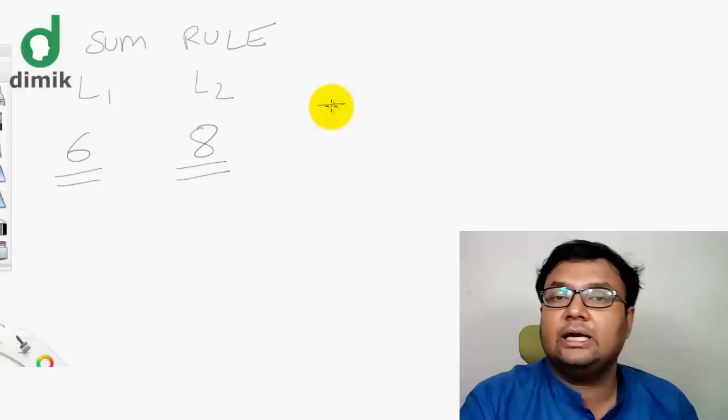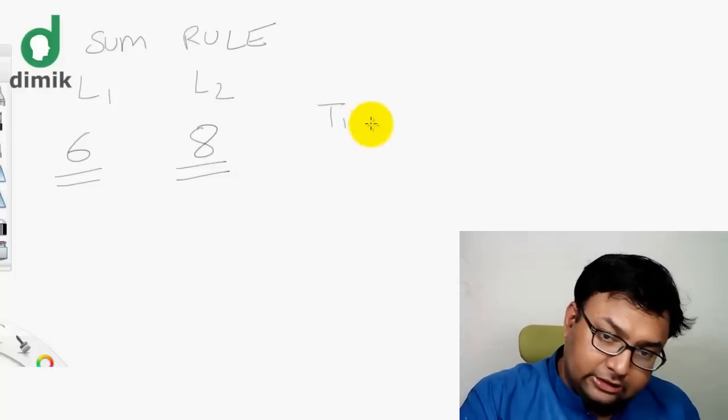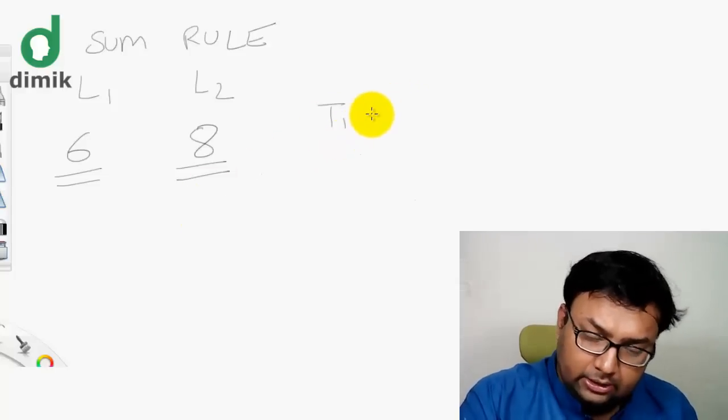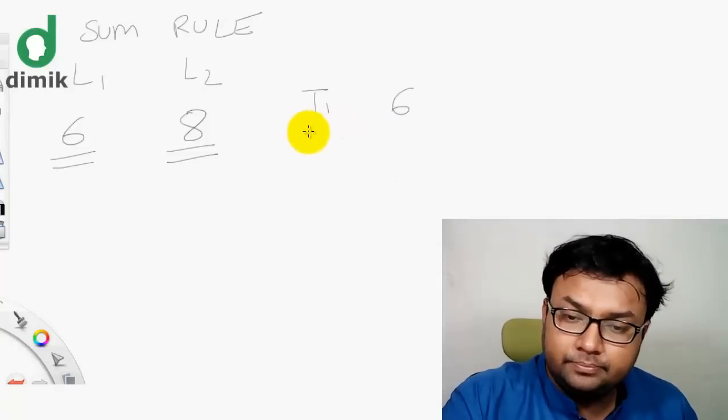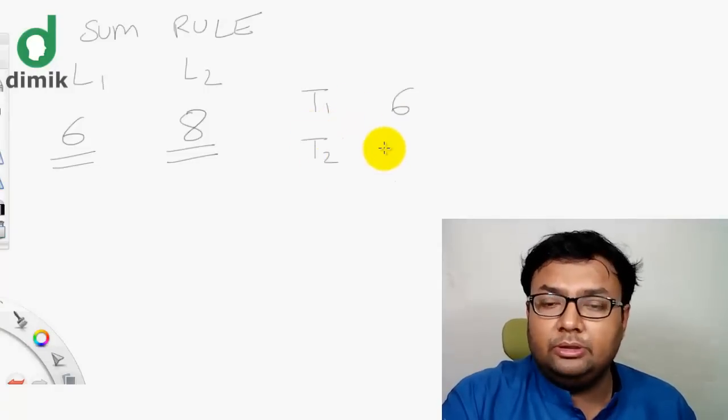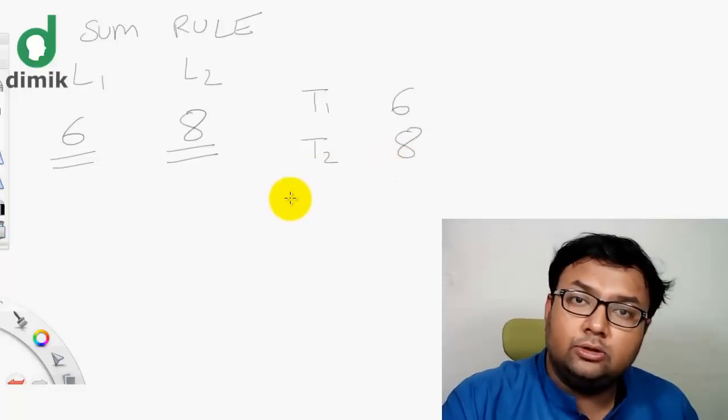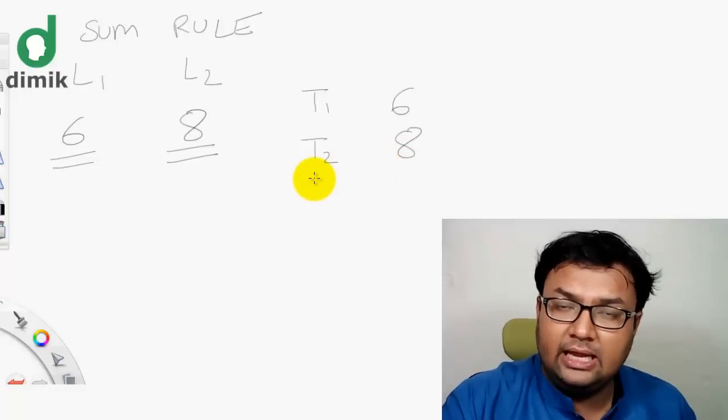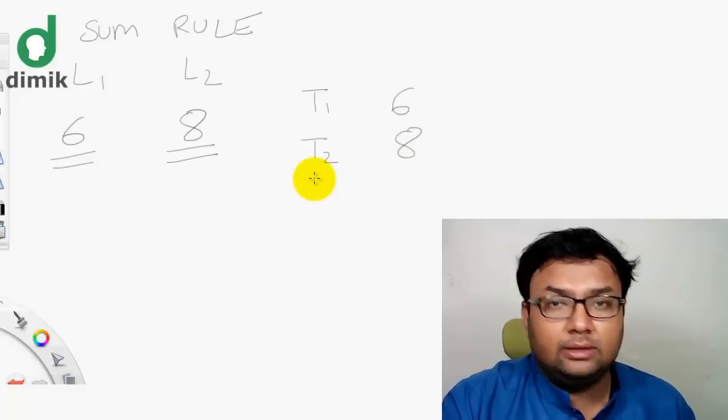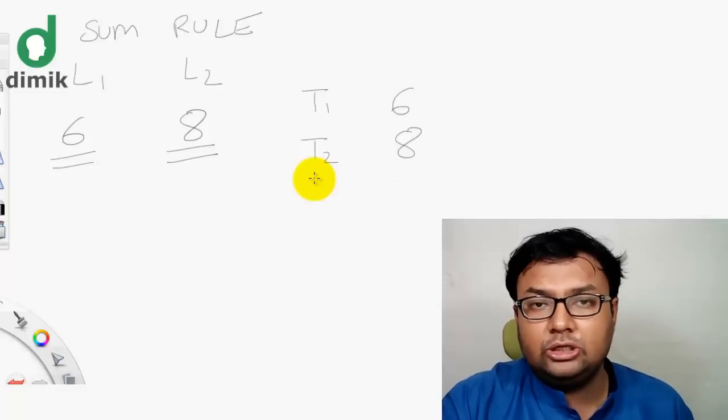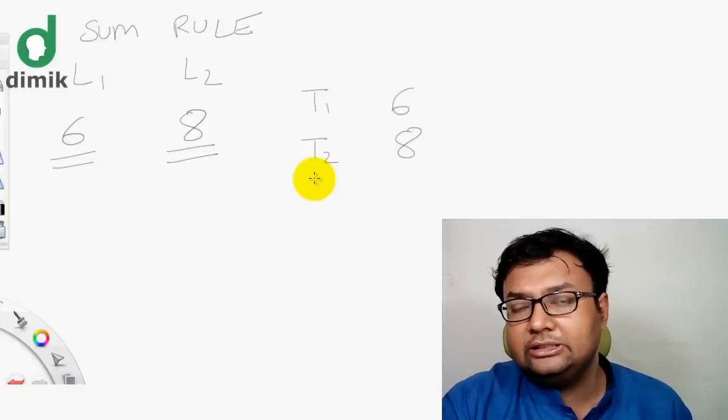T1 is the first list of topics which is 6. Then T2 is the second list of topics which is 8. So the task is the second list of topics, which is independent from the first list.